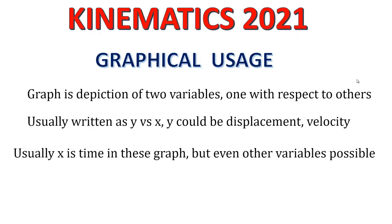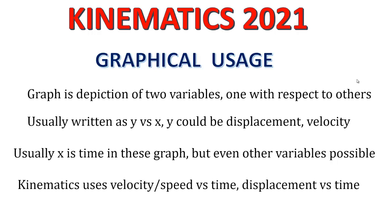The x-axis on these graphs is usually time, but any other variable is possible. It is a y versus x graph, so if y is velocity, we call it velocity versus time, knowing that time is on the x-axis. In kinematics, we commonly use velocity versus time, speed versus time, displacement versus time, and sometimes acceleration versus time.